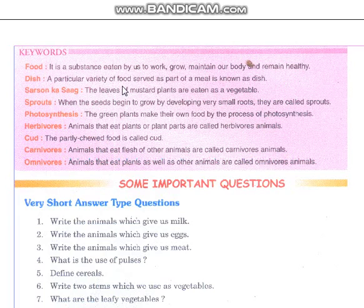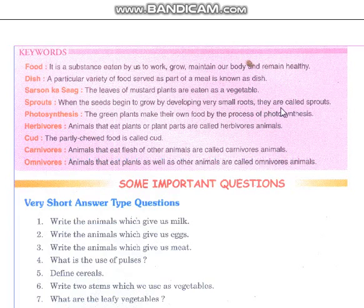Dish: a particular variety of food served as a part of a meal is known as a dish. Sarsun ka saag: the leaves of mustard plants are eaten as vegetable. Sprouts: when the seeds begin to grow by developing very small roots, they are called sprouts.